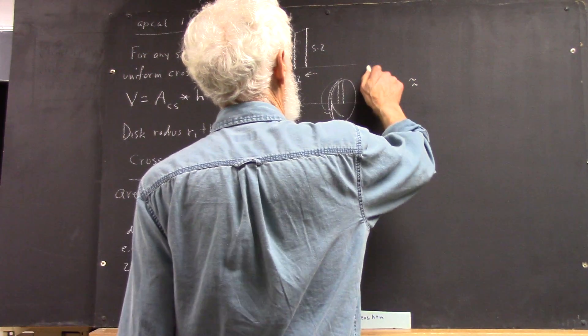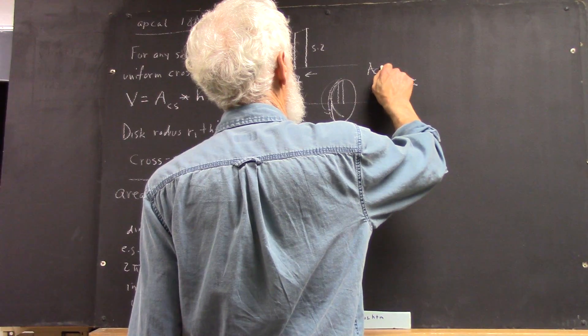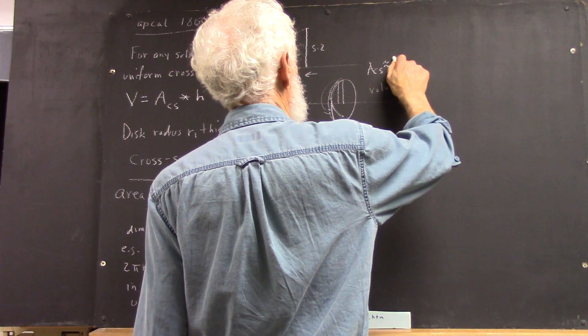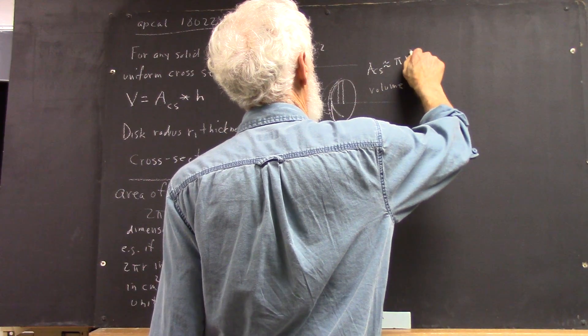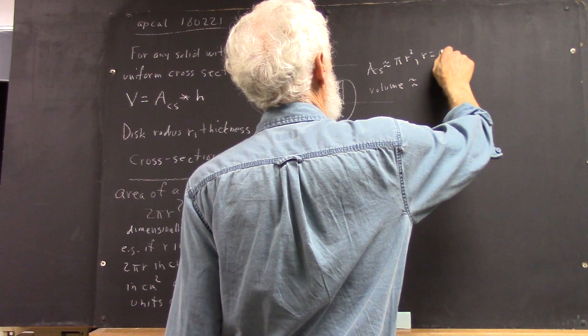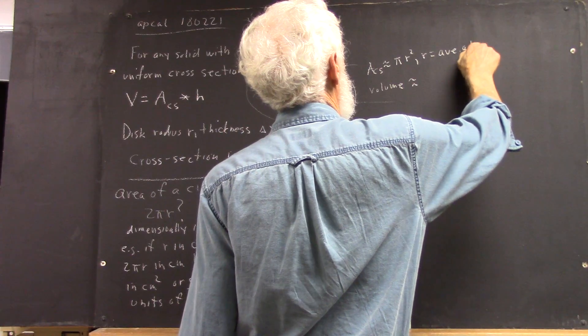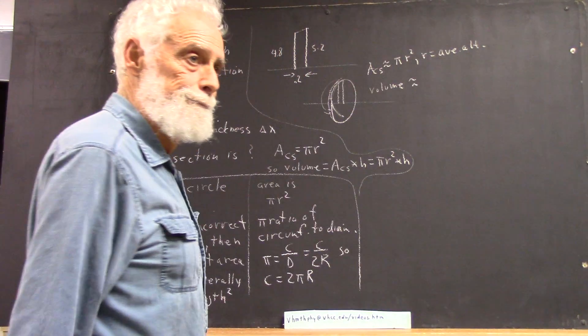So, cross-sectional area is approximately equal to pi r squared, r equal to the average altitude.